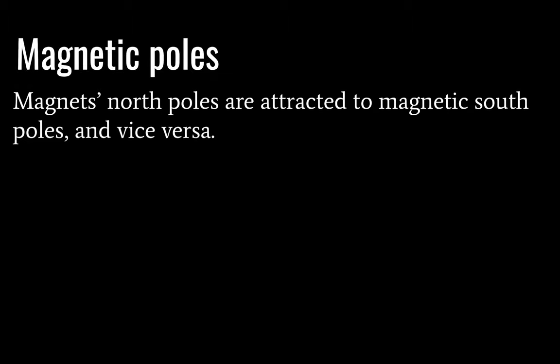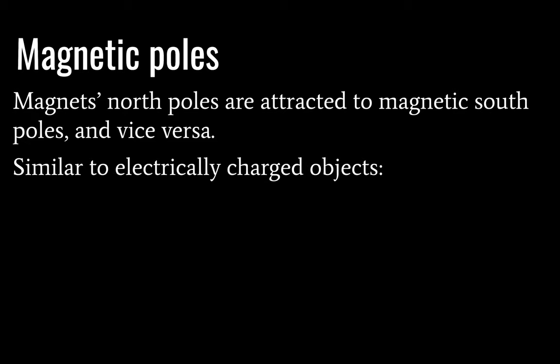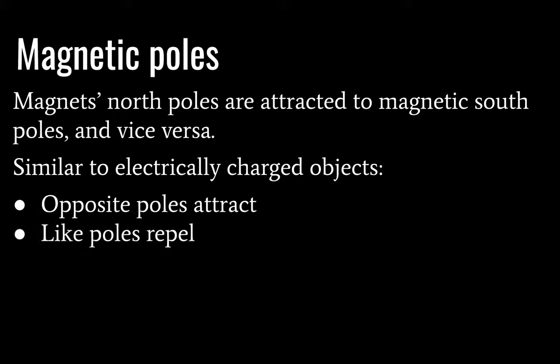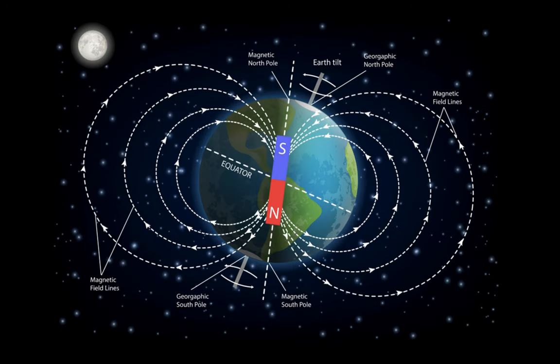Magnetic north poles are attracted to magnetic south poles, and vice versa. So this is kind of similar to electrically charged objects, where opposite poles attract each other, and like poles repel each other. And if you've ever played with a couple of bar magnets for 10 minutes, you'll be aware that playing with like poles is quite fun. It's weird.